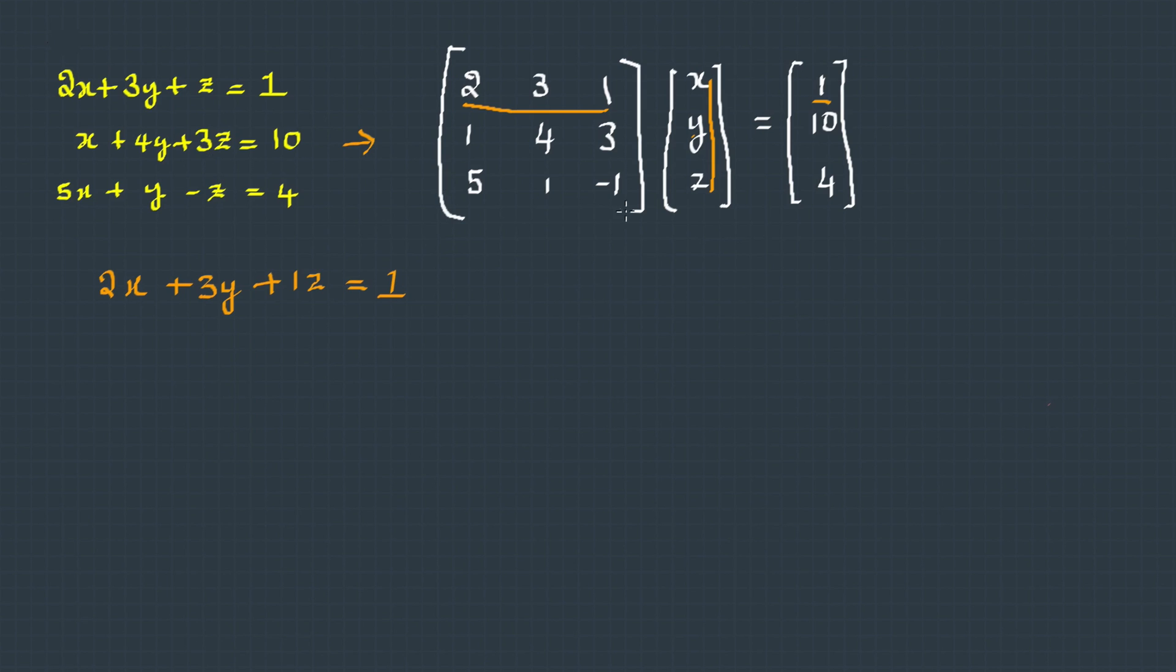We can think of the coefficient matrix as A, the variable matrix as X, and the results as B. This is the standard representation of a system of equations: AX = B. Here, A is called the coefficient matrix.